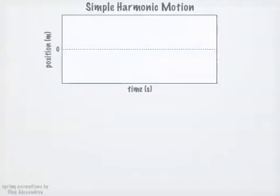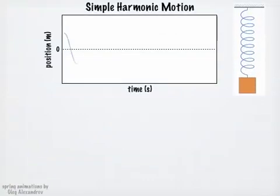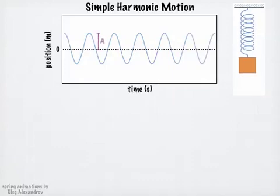Damped harmonic motion. If we plot the position versus time of a simple harmonic oscillator, such as an ideal spring, we see that the graph has a constant amplitude. The amplitude stays the same throughout the motion.